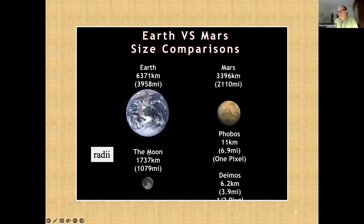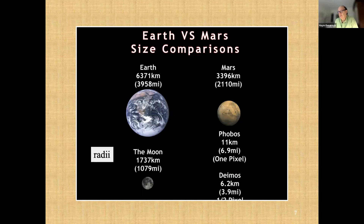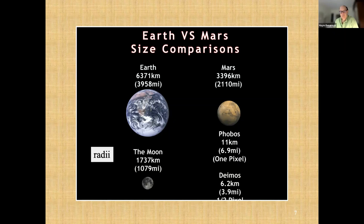It's always good to remember the comparative sizes as we speak about the moon, Mars, and Earth. Basically, the ratio of radii of moon, Mars, and Earth is roughly one to two to four. Many people always imagined the moon to be much bigger than it really is in comparison to the Earth, so this scale comparison reminds us how small the moon really is.